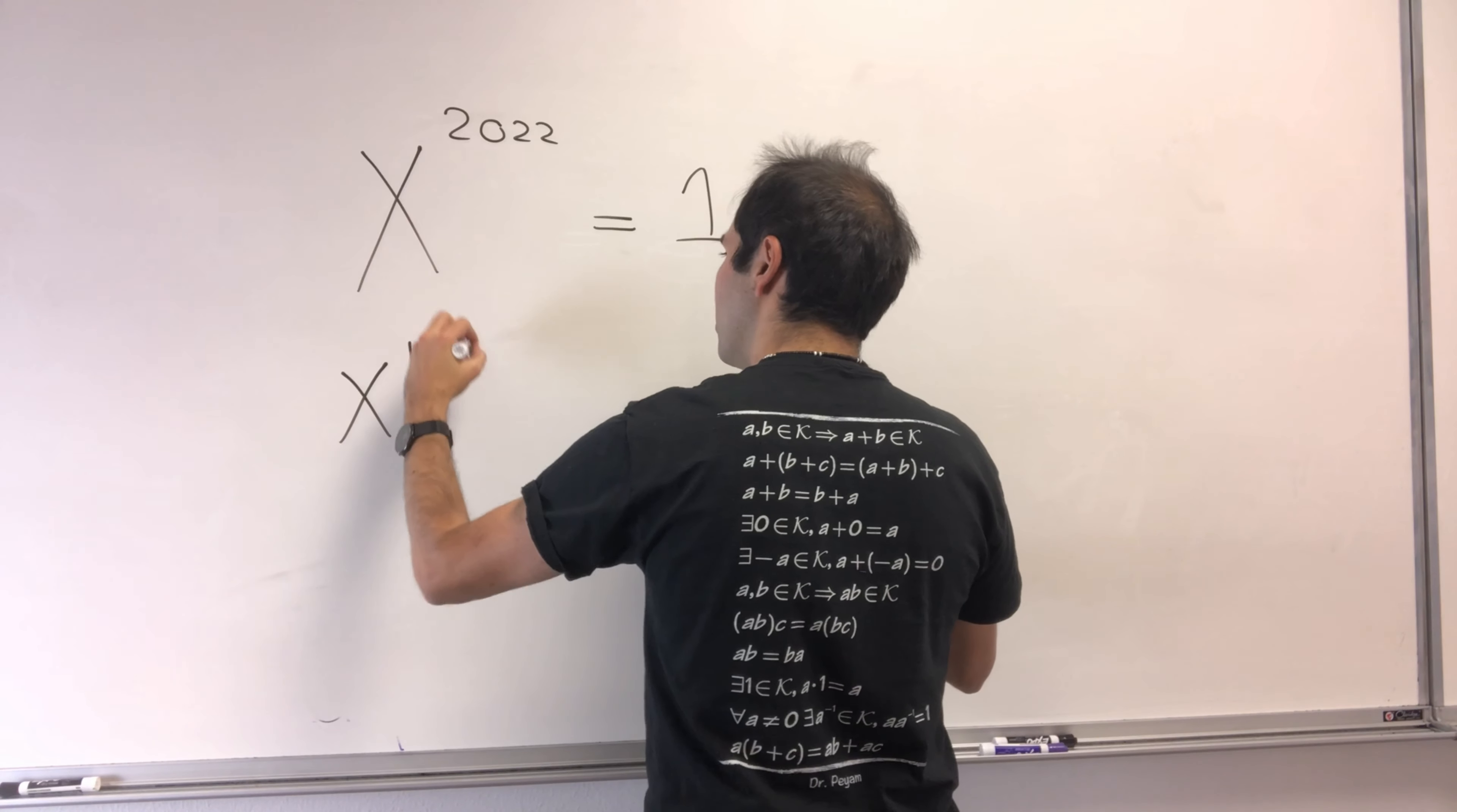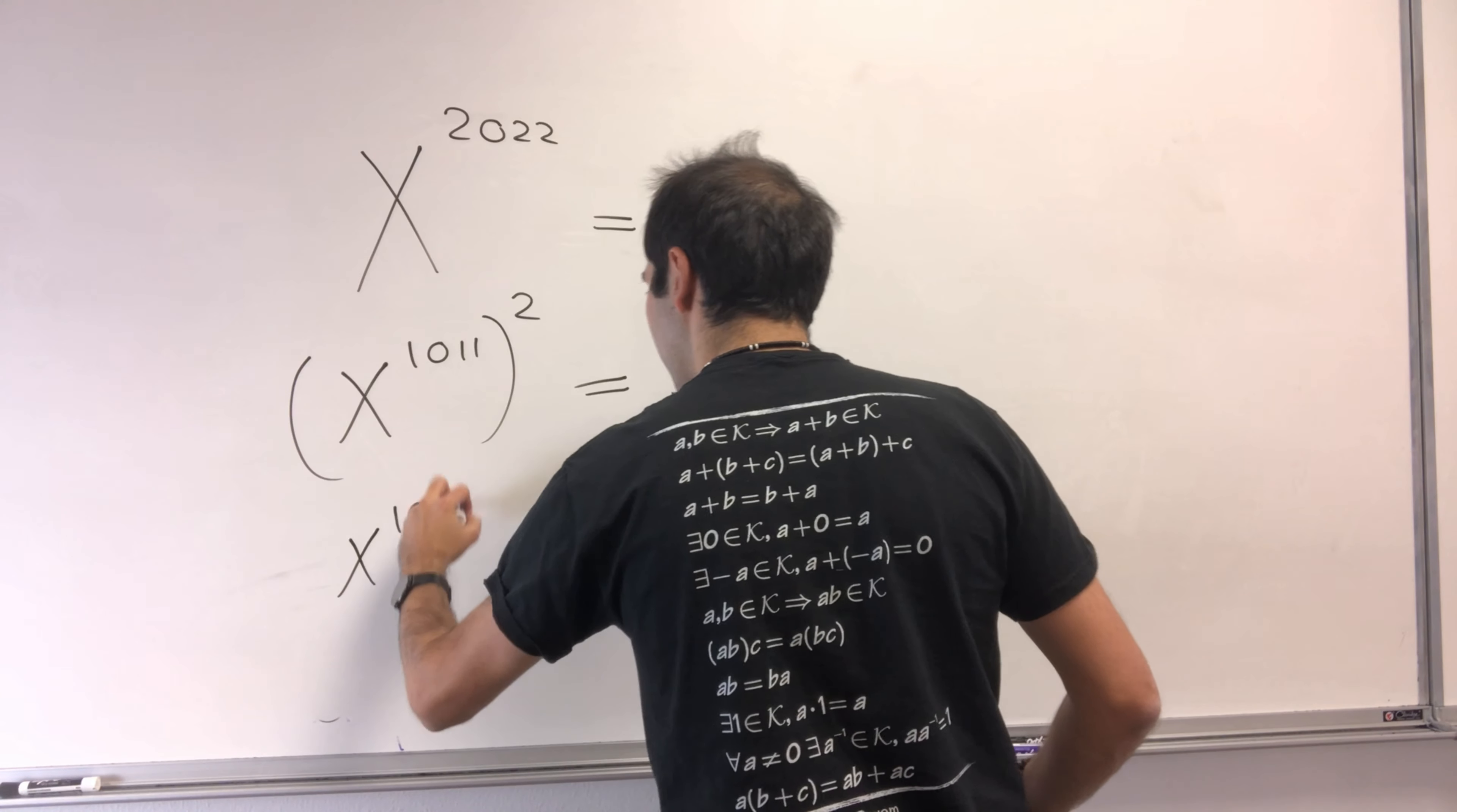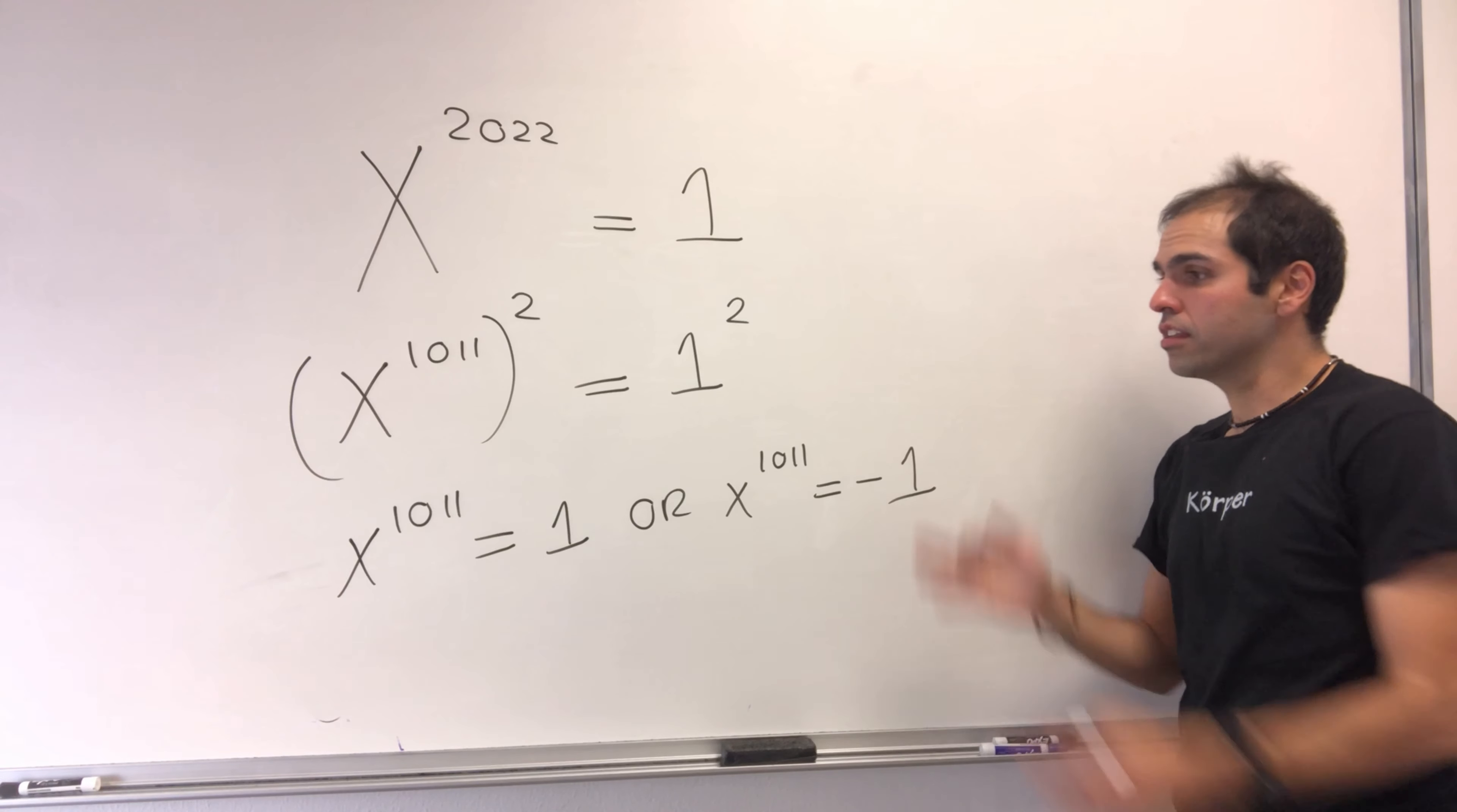x to the 2022 is x to the 1011 squared equals 1 squared. What does that tell you? It tells you x to the 1011 is 1 or x to the 1011 is minus 1. Since 1011 is odd, you just take the root.